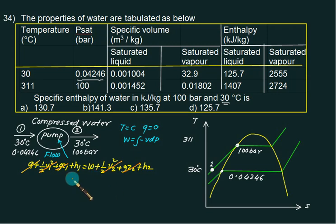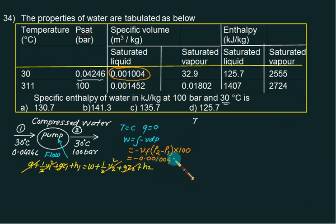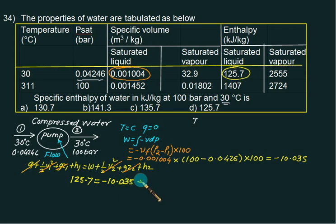Since the specific volume of water is constant, pump work W = −Vf × (P2 − P1) × 100 (converting bar to kJ/kg). With Vf = 0.001004, P2 = 100 bar, P1 = 0.04246 bar: W = −0.001004 × (100 − 0.04246) × 100 = −10.035 kJ/kg. Using the SFEE with H1 = Hf = 125.7 kJ/kg: 125.7 − 10.035 = H2, giving H2 ≈ 135.7 kJ/kg. Choice C is correct.